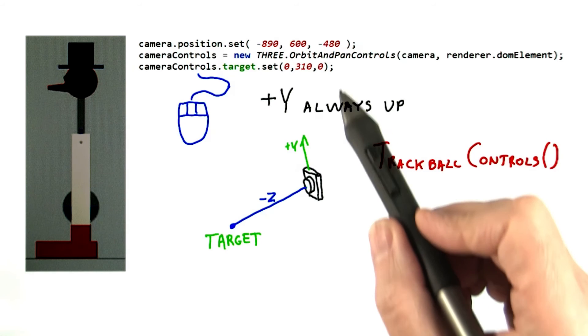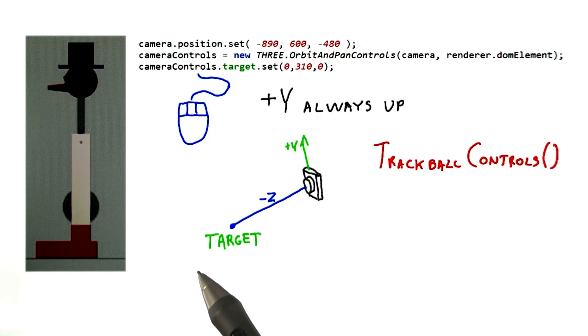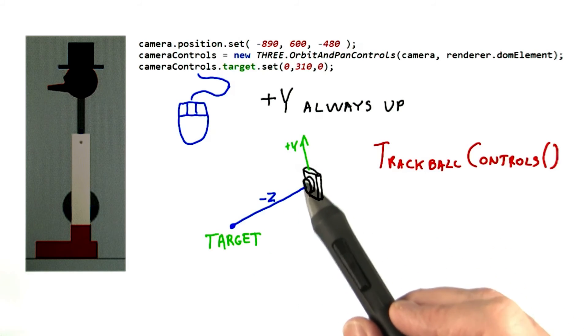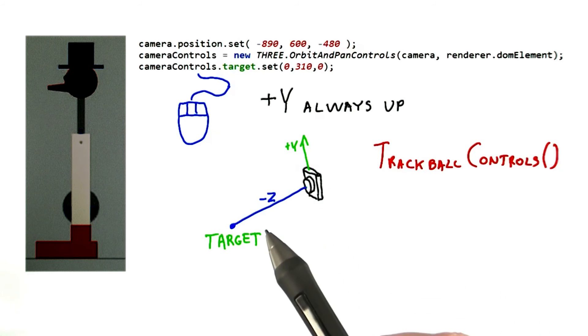In either case, the next line sets the target for the camera. The target is the location being looked at. This defines a new z-axis direction for the camera. The y-axis is kept pointing up as best as possible. We'll talk about that later when we look at the matrices forming this camera.